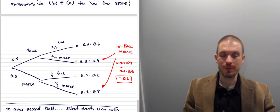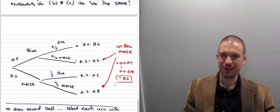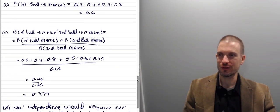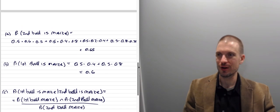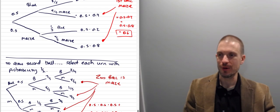So the probability that the first ball is maize — that happens in two branches — we add them: 0.5 × 0.4 plus 0.5 × 0.8 equals 0.6. The probability the first ball is maize is 0.6.